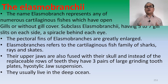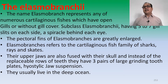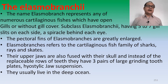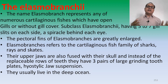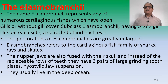Elasmobranchii have five to seven gill slits on each side, and a spiracle is present behind each eye. Their pectoral fins are greatly enlarged. Elasmobranchii refers to the cartilaginous fish family of sharks, rays, and skates.